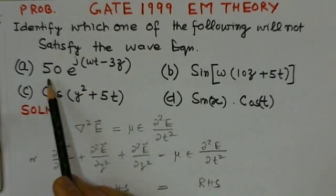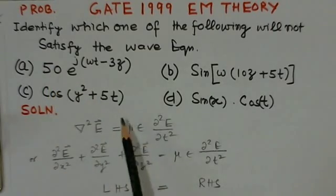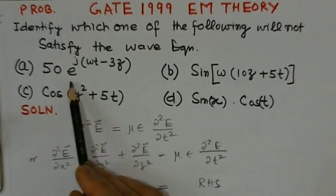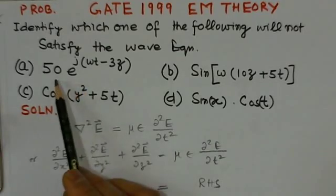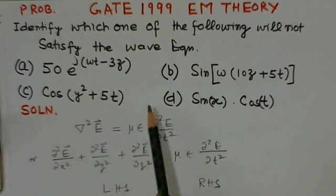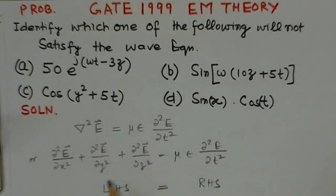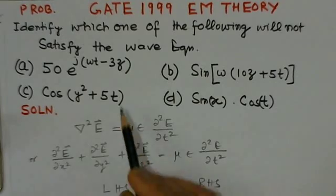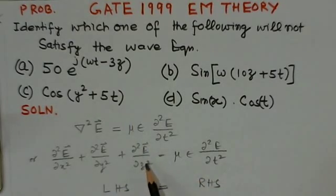Suppose you take this case, option A. You can find here for option A, the variable would be z. This x and y derivatives would not be there, there will be zero. Only there will be variation delta 2 E over delta z square. If you differentiate this twice, you will find a value coming.